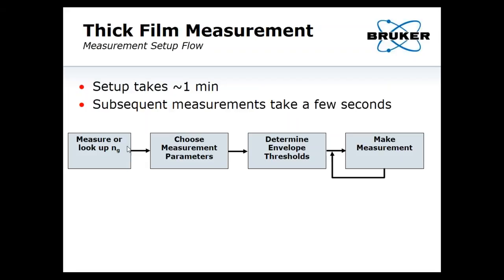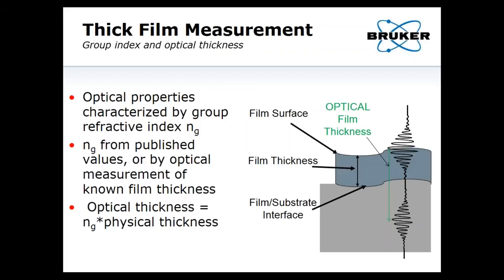First you need to know the group refractive index. Then you set up the measurement the same way you would a normal VSI measurement. Then you define some envelope thresholds that set the signal and noise for both the top surface of the film and the bottom buried interface. Once that's done, it's one and done per sample type. You can just loop these measurements and take as many as you'd like, and you can automate this to sample a whole wafer or a number of devices.